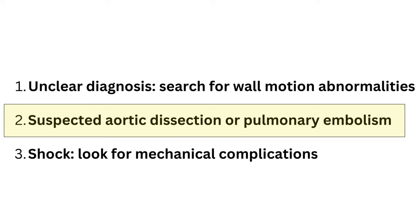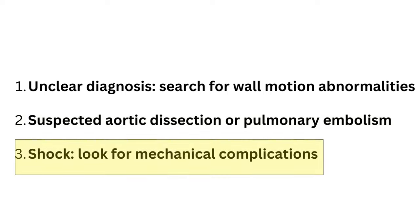When we are suspecting an alternative diagnosis — for example, you find unequal pulse or you hear a murmur of aortic insufficiency — then echocardiography becomes essential. Or when we are suspecting pulmonary embolism, where echo can show right-side dilatation, right ventricular dysfunction, and possible elevation of pulmonary artery pressure. The third situation where echo should be done is when the patient is in cardiogenic shock or shows hemodynamic instability. Echo is essential to assess LV and RV functions and to look for mechanical complications like ventricular septal rupture or acute severe mitral insufficiency.